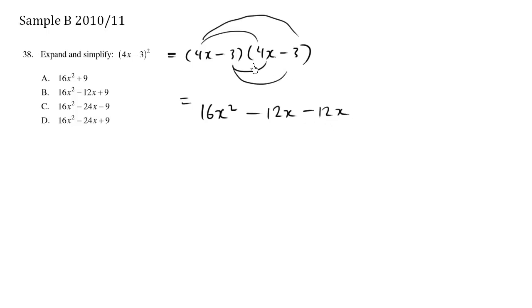And last is going to be negative 3 times negative 3, which is positive 9. So we have 16x squared minus 24x plus 9.